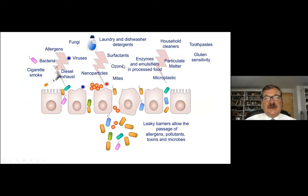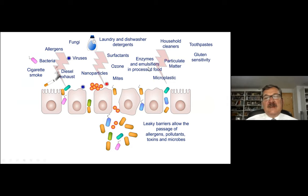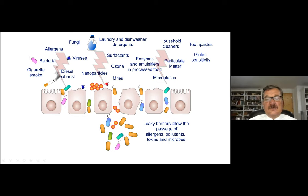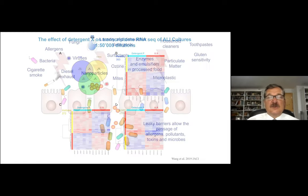Here we have many agents that came into our lives after the 1960s. We can count: laundry and dishwasher detergents, household cleaners, toothpaste, surfactants, nanoparticles, ozone, enzymes and emulsifiers in processed foods, particulate matter, gluten sensitivity, and microplastics. Some existed at very low levels, and we also have allergens, bacteria, cigarette smoke, fungi, and mites that damage the barrier. But the input of substances introduced after modernization, urbanization, and industrialization is huge. The epithelial cells are not making a strong barrier anymore; the microbiome goes deeper, and there is a leaky barrier concept developing.